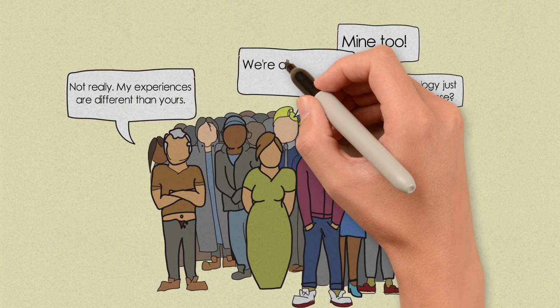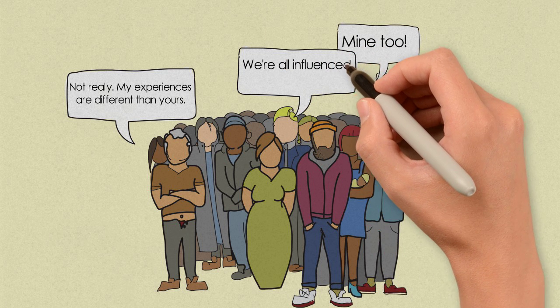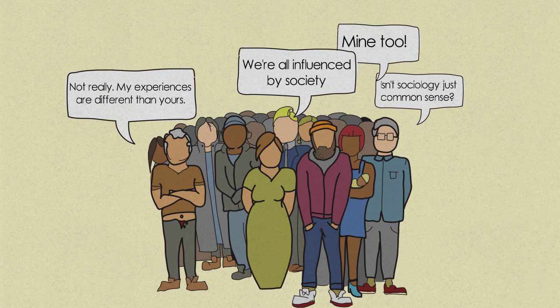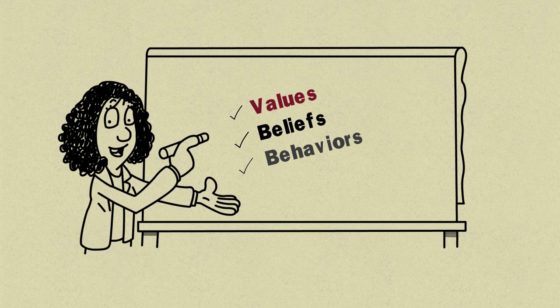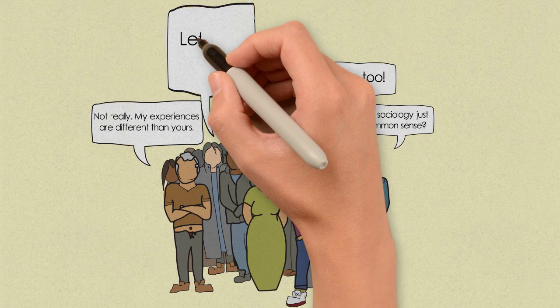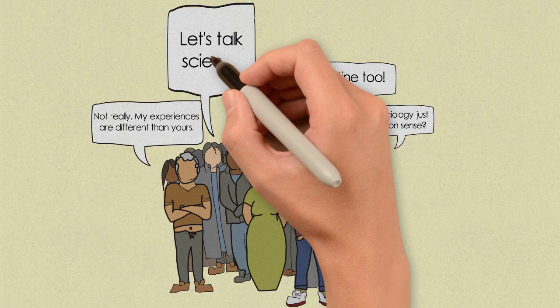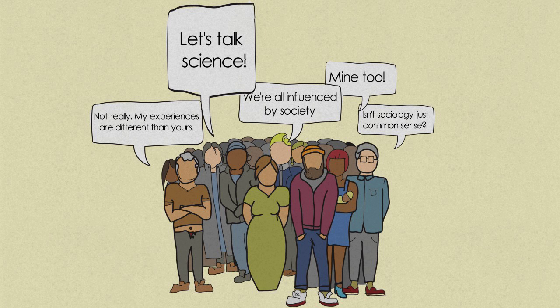People don't behave the way they are just because that's who they are. We are heavily influenced by society. Sociology applies the scientific method and aims to understand how groups of people may experience life and be affected by values, beliefs, behaviors, and even events and the way society is structured. Applying a scientific analysis helps us begin to understand a large, socially complex picture.